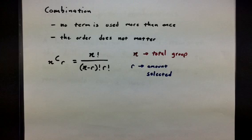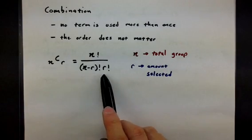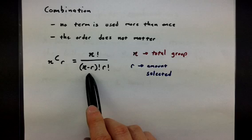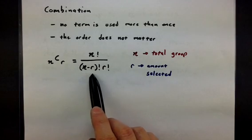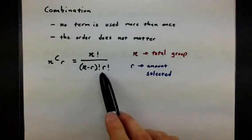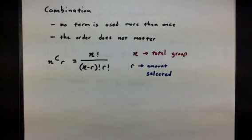I also want to know how many things am I selecting from this group. That's what the R is and it shows up in two places on the bottom. One when you do N minus R and take the factorial and one when it's just R factorial.